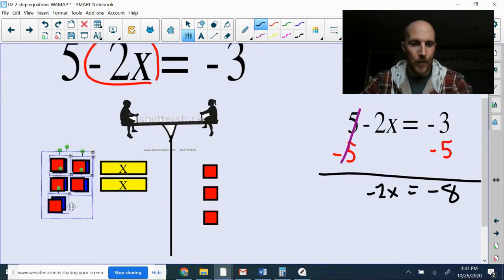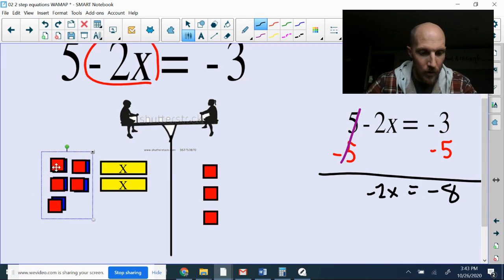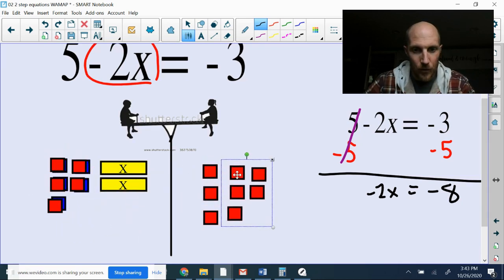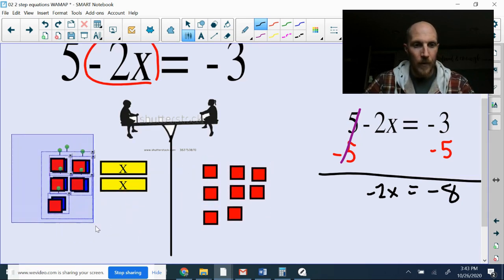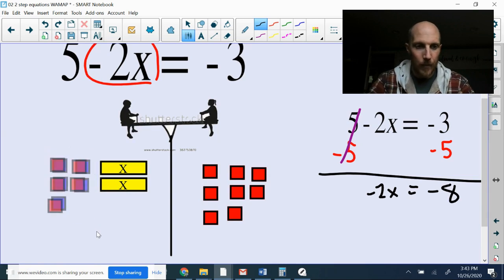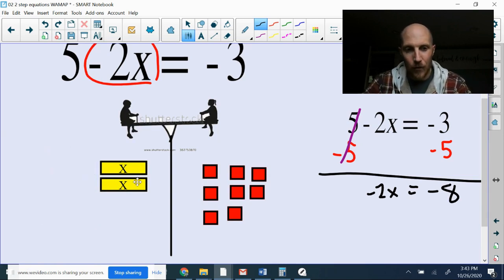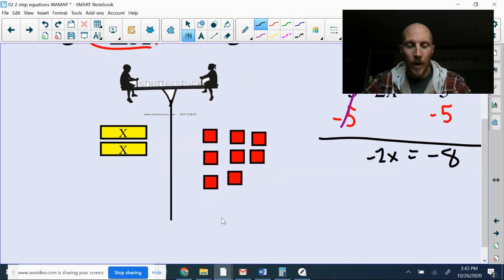Right. So before I do that, I need to have these over here also. I've got to do the same thing on both sides. Now I can delete all of that. So I've got negative 2x in the yellow. And now I have eight negative red blocks. OK.